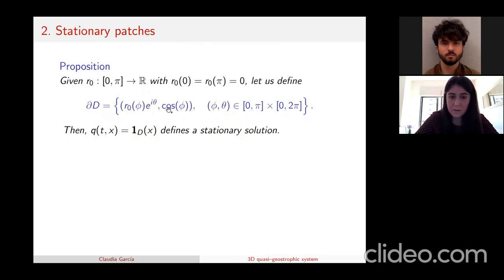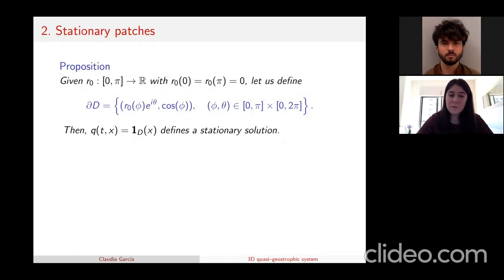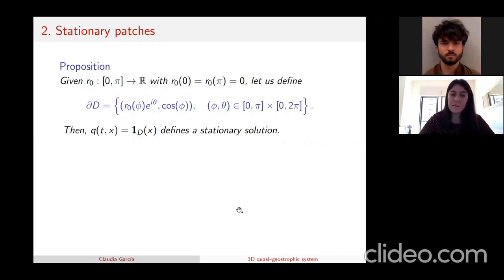The height x₃ is the cosine of phi, where phi moves from zero to pi, and the horizontal variables are parameterized accordingly. At every height we have a disk of radius r₀(phi). All such domains define a stationary solution. From now on I will not talk about potential vorticity directly, but will analyze domains — because if I study the evolution of a domain, I know exactly how the potential vorticity looks.